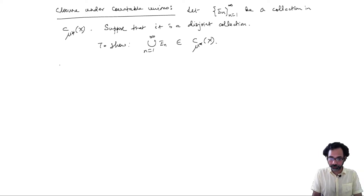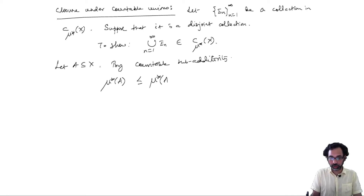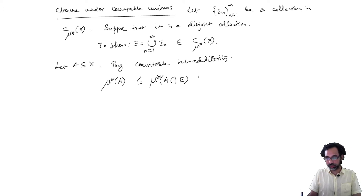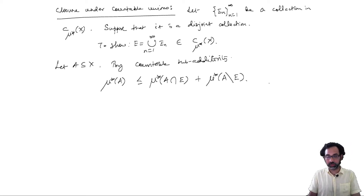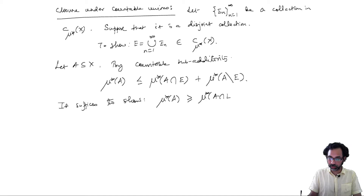Let A be any subset. By countable sub-additivity, we have that μ*(A) is less than or equal to μ*(A ∩ E) plus μ*(A \ E), where E denotes the countable union. This always holds by countable sub-additivity of the outer measure μ*. So it suffices to show that μ*(A) is greater than or equal to μ*(A ∩ E) plus μ*(A \ E).